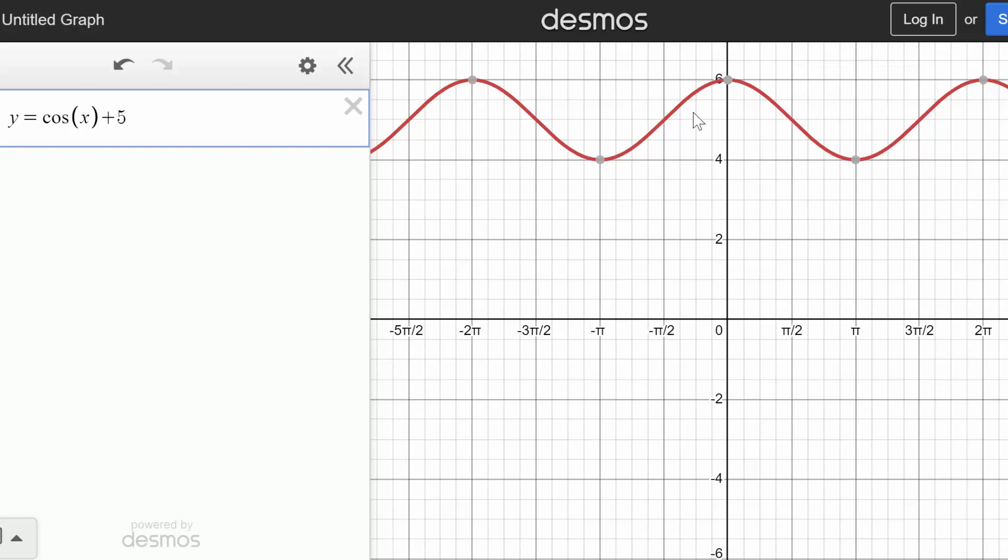And if we wanted to shift it down, of course, we would just use subtraction. You can see subtracting by four shifts everything down four units. Or in other words, it shifts our midline down four units. And this will give you a rough idea since this is not an exact coordinate point.